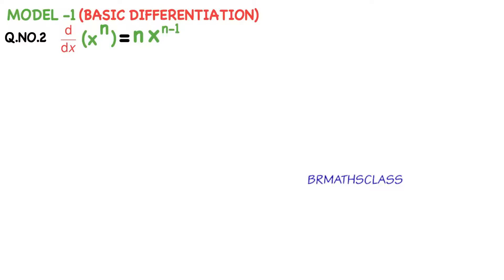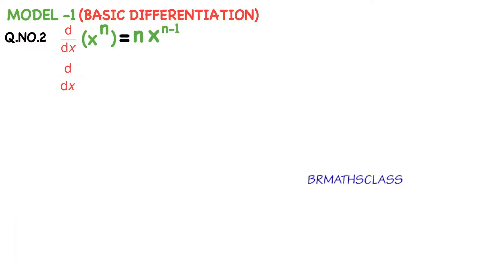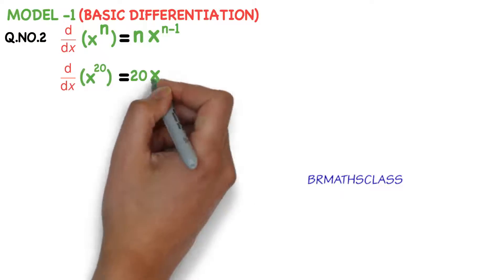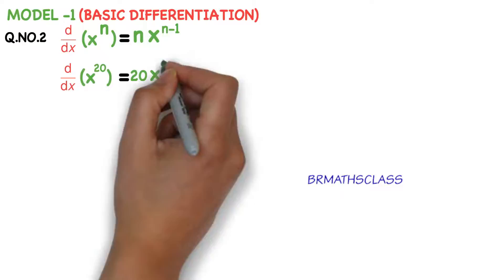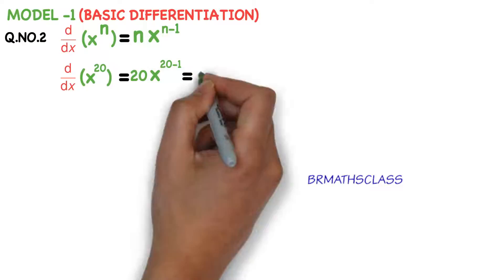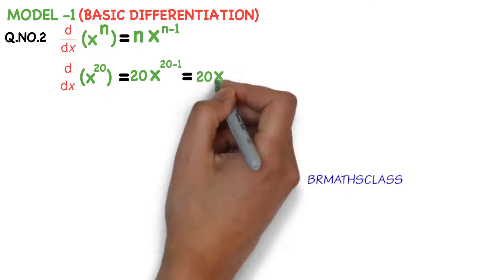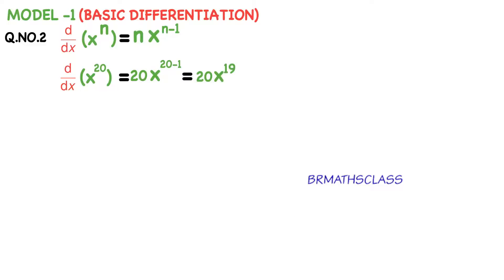d by dx of x power 20 — it means the derivative of x power 20 with respect to x. Applying the formula: 20 into x power 20 minus 1. So the derivative of x power 20 is 20 into x power 19.